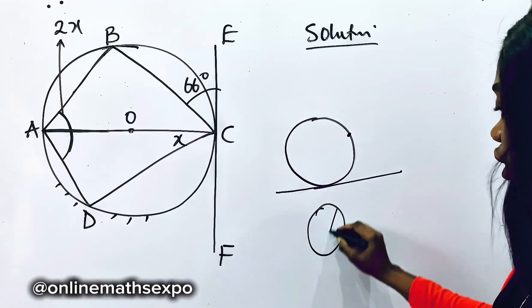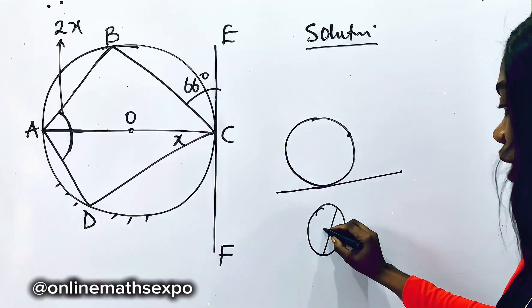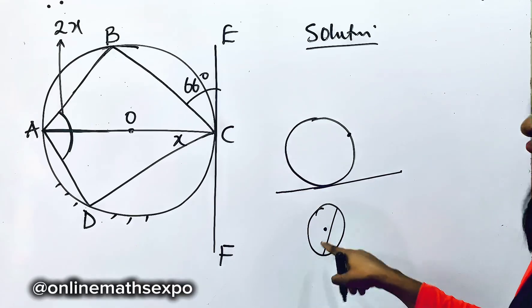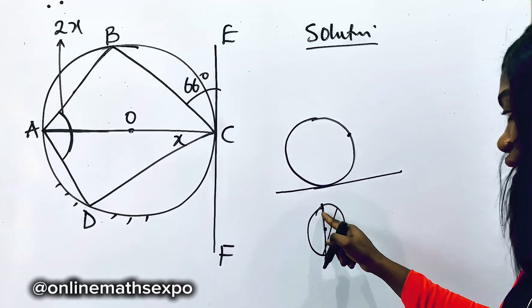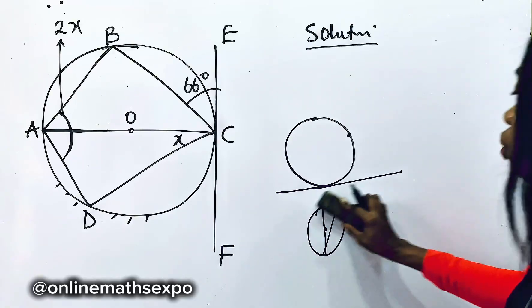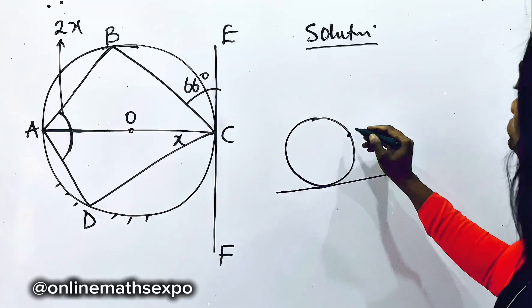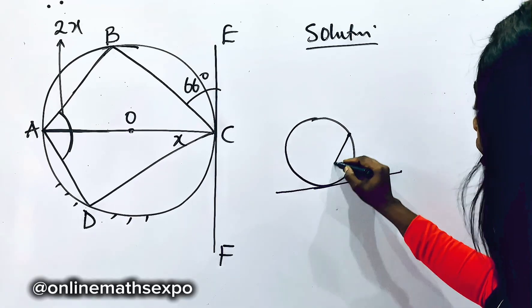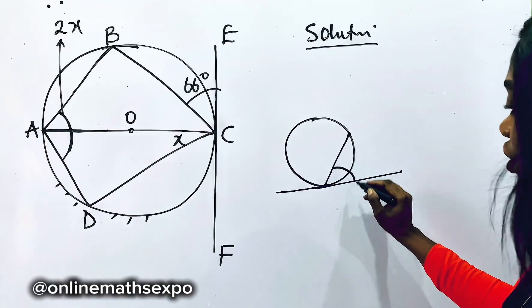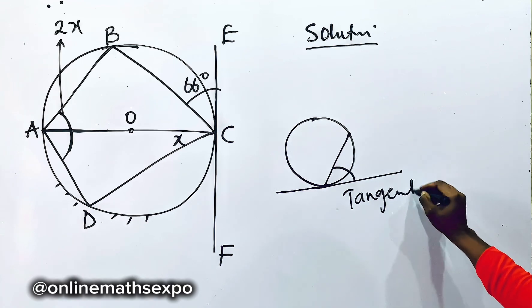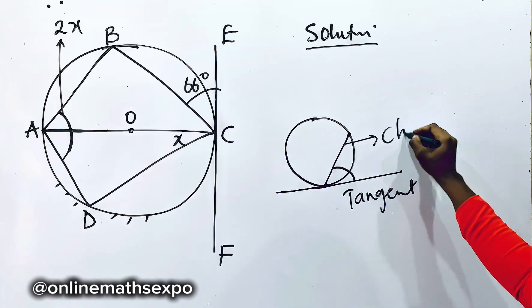So when you have a circle drawn, this becomes a chord. It does not pass through the center. We call this a chord. When it passes through the center like this, we call it a diameter. Now, what do you do? When this chord comes in contact with the tangent, the angle this chord makes with this tangent, this is your tangent, and this one is your chord.